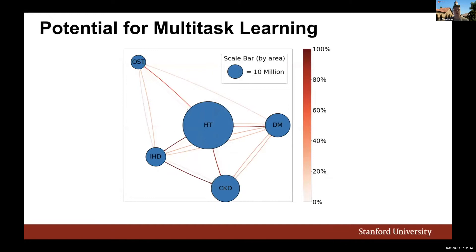We also saw this as an exciting place to apply multitask learning. There are high comorbidity relationships between these diseases — the size of each node shows disease prevalence and arrow colors show comorbidities. Since these diseases share common risk factors, we hypothesized that representations should be shareable across tasks.